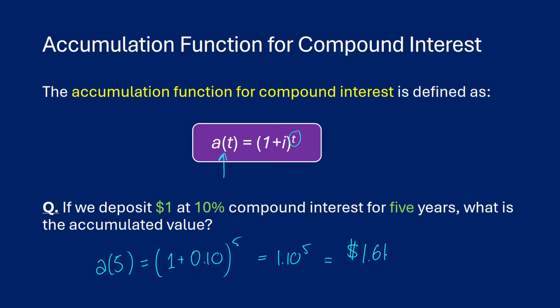Now if we were to do this with simple interest instead, we'd be gaining 10% on one dollar for five years — 10% every single year for five years — which would give us a total of $1.50. So we can see that over a five-year period, compound interest generates more money than simple interest.